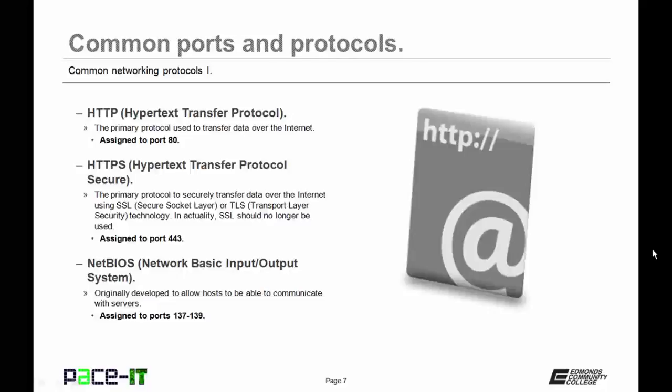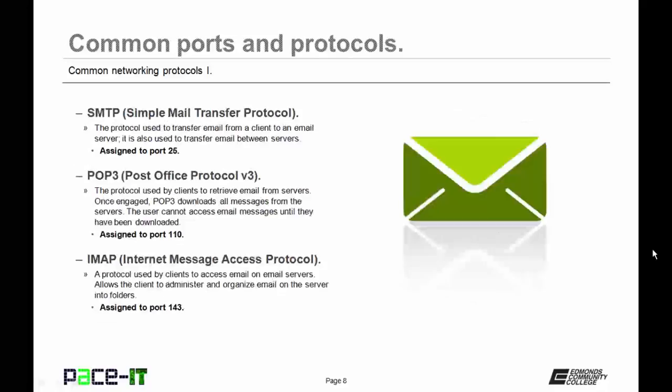Then there's NetBIOS, that's Network Basic Input Output System. This was originally developed to allow hosts to be able to communicate with servers. By default, it's assigned to ports 137 through 139. Then we have SMTP, or Simple Mail Transfer Protocol. This is the protocol that's used to transfer email from a client to an email server, or to transfer email between different email servers.